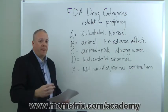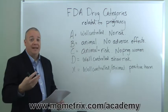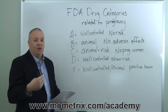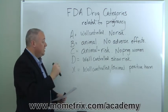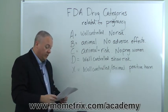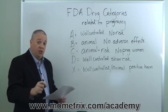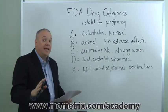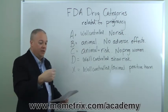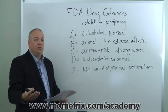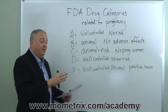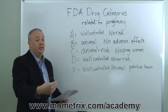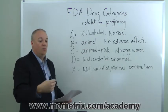Category B drugs are drugs that have had clinical trials related to animals, and in those animal trials there have been no adverse effects on the animal fetuses. It is also possible in Category B drugs that animal studies do show adverse effects on the animal fetuses, and yet studies on pregnant women don't show any adverse effects.